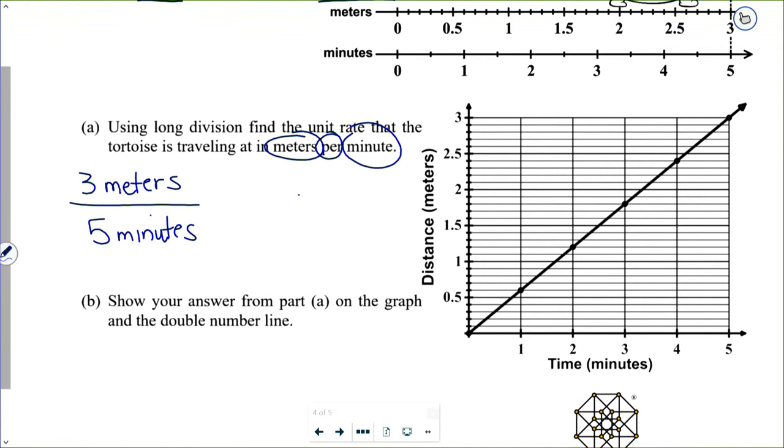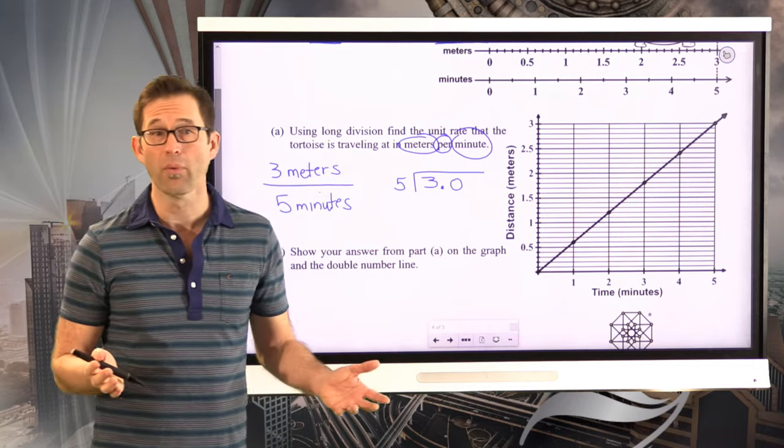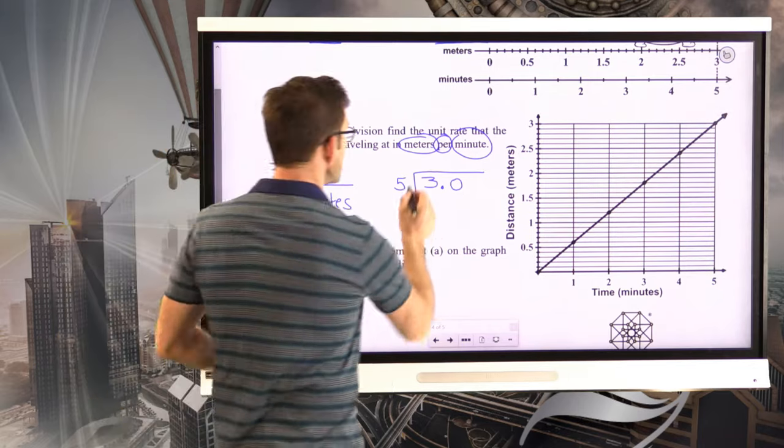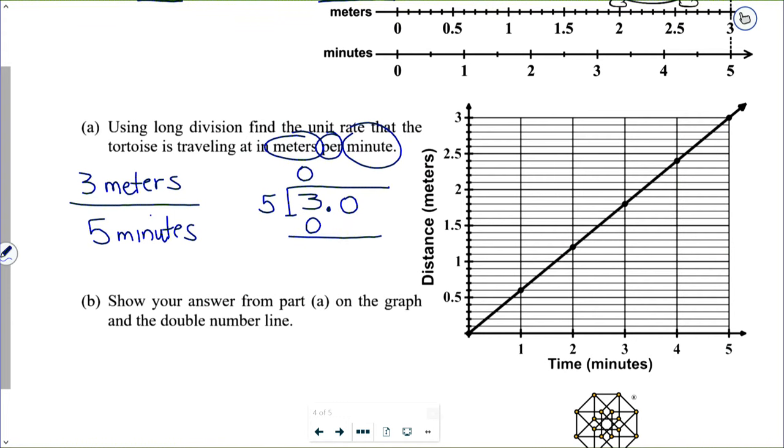Now, if I want that as a decimal, what I'm going to have to do is go over here and divide three by five. Of course, I can do that longhand by changing the three into a 3.0. Of course, five goes into three zero times. When I do my subtraction, I then end up with a 30. Put my decimal point up here. Five goes into 36 times. Subtract, and I get zero. So here we go. So we get 0.6 meters per minute. In other words, the tortoise is moving at less than a meter per minute.